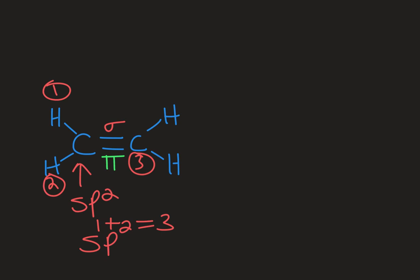The furthest apart three things can get is 120 degrees. So the bond angle of an sp2 hybridized carbon is 120 degrees. And the shape is trigonal planar. So those groups can all be in one plane when there are only three of them.